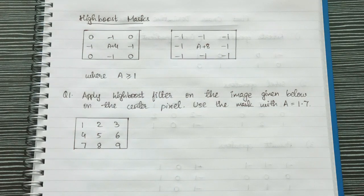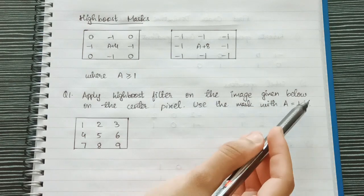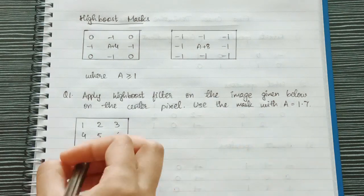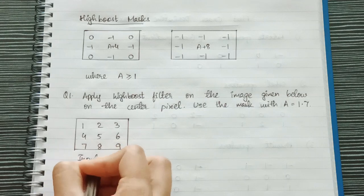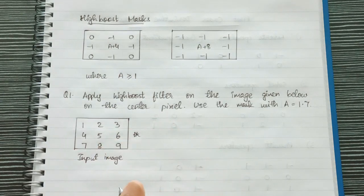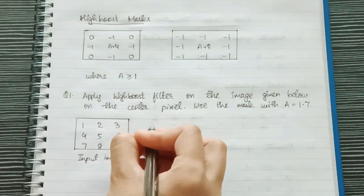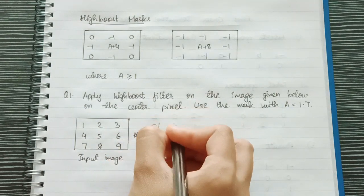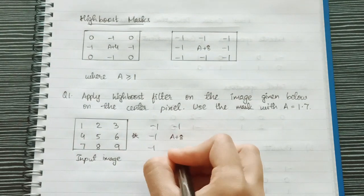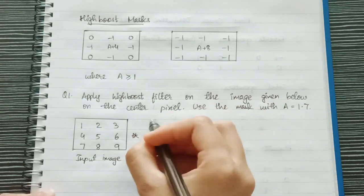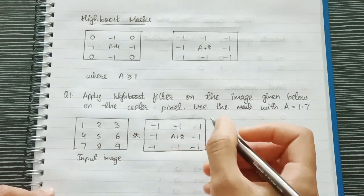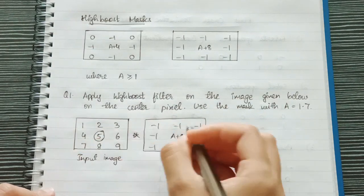Now let's look at a question here. Apply high boost filter on the image given below on the center pixel. Use the mask with A is equal to 1.7. So we have our input image here and we would apply the above filter. So let's just choose this filter and let's apply it on this image.